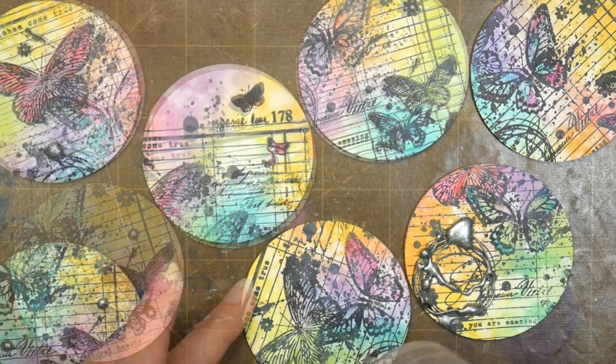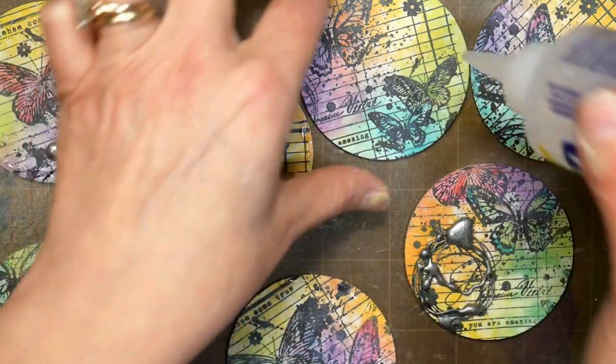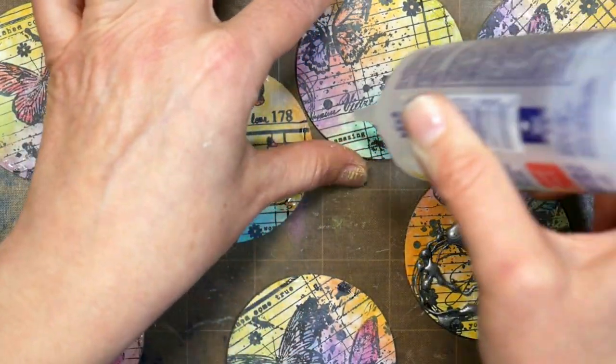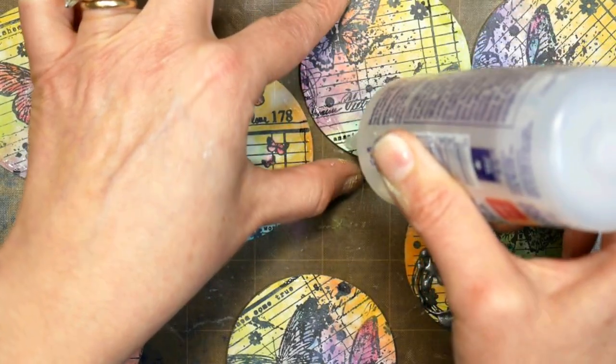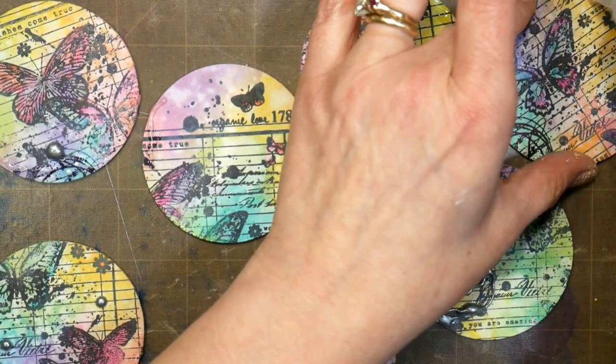I do recommend gluing down any of those embossing powder drops if you decided to do them. I flicked them with my fingernails to see if they would come loose and if they did I glued them. Then I decided I did want some of that chunky diamond dust glitter, so I'm going around the edges adding Beacon 3-in-1 to give me a nice base for the glitter.